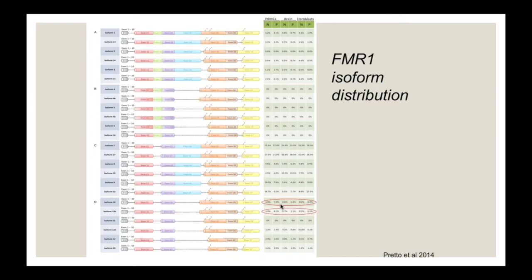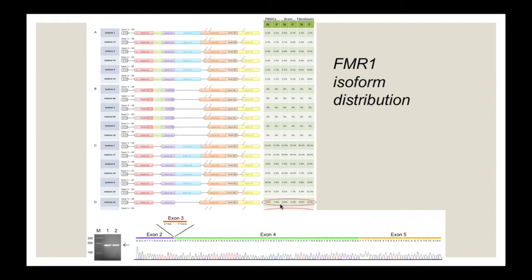These highly expressed isoforms are interesting because they give rise to truncated proteins. We also detected a novel splice isoform never detected before involving exon 3, from libraries covering the 5-prime UTR to exon 9. This isoform lacking exon 3 was also validated by quantitative PCR and was overexpressed in premutation carriers. There was not one isoform mostly expressed in permutations more than others, and there were no significant tissue-specific differences in expression levels.